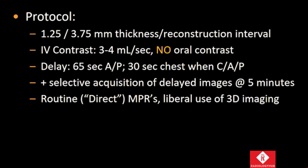In general, we acquire images with a thin slice reconstructed at thicker slices. We use 1.25 millimeters and then reconstruct them at 3.75 and use mostly the thicker slices for evaluation, with the thin slices available for problem solving. IV contrast is almost mandatory for these patients. No oral contrast is necessary. We typically use a portal venous phase at about 65 to 70 seconds, following a 30-second chest acquisition when a chest, abdomen, and pelvic CT is required, which is almost routine in severely traumatized patients. We selectively acquire delayed images at about 5 minutes post-injection, and every series acquired has direct multiplanar formats generated. We also liberally use 3D imaging as necessary.